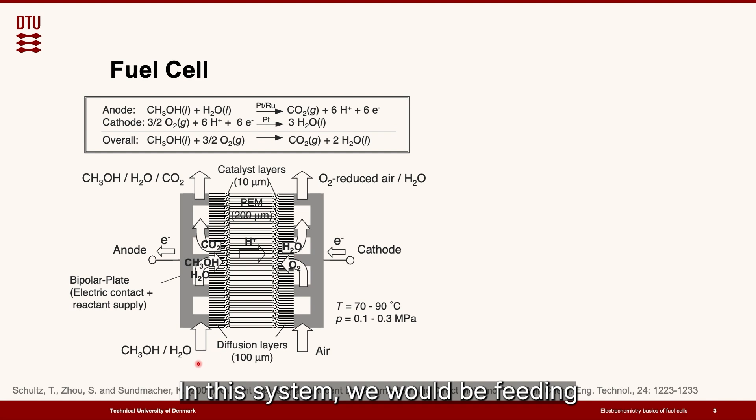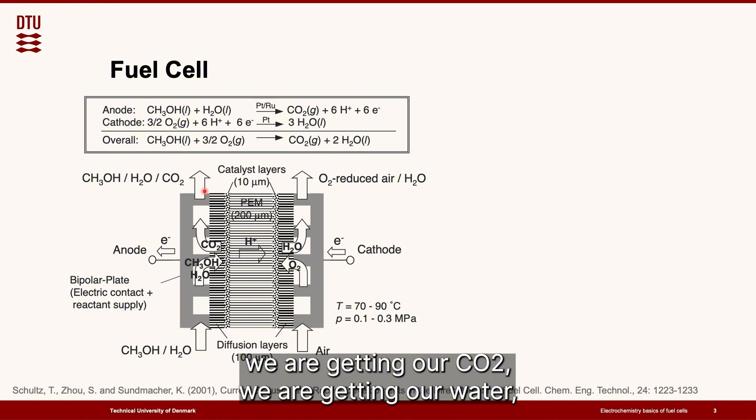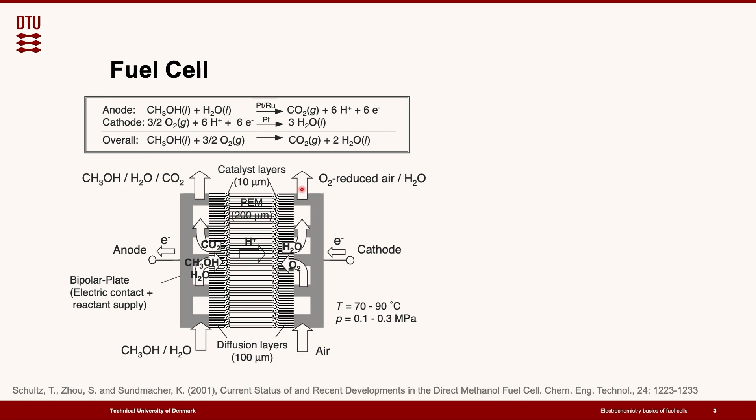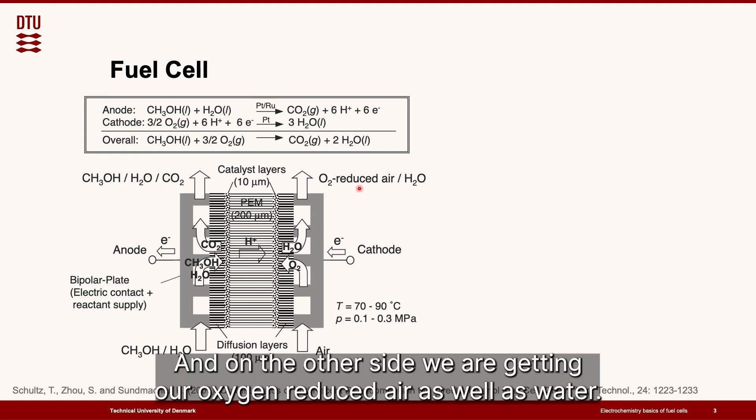In this system we would be feeding our humidified methanol to the anode and we will be feeding our air or oxygen-saturated air to the cathode. As the end products of this reaction, we're getting our CO2, we're getting our water, perhaps some remaining unreacted methanol, and on the other side we're getting our oxygen-reduced air as well as water.